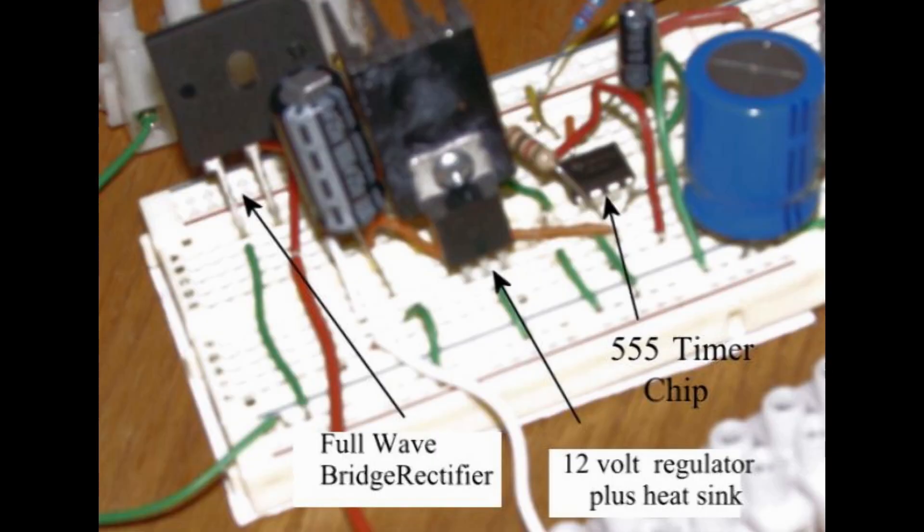The workhorse of the circuit is this small 8 pin dual inline 555 timing chip. It's been around since the late 1970s, but it is still available and still is useful for a number of timing functions.